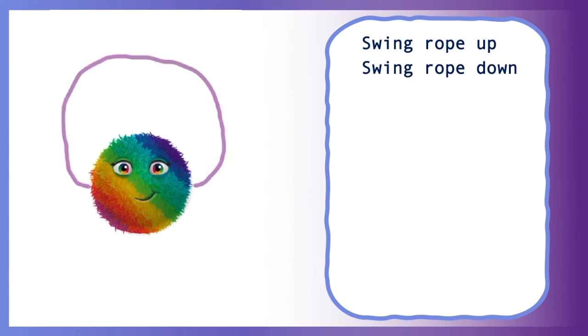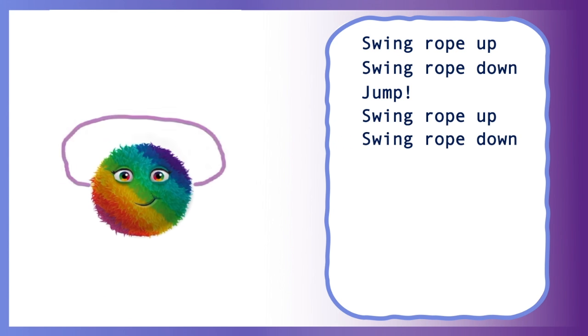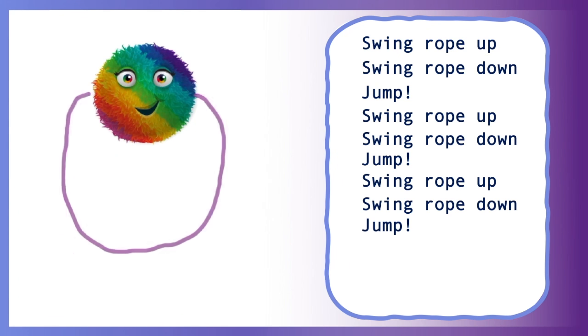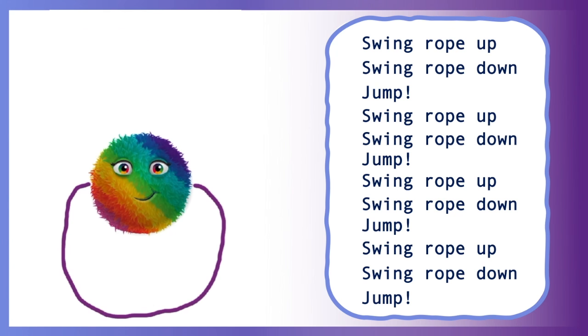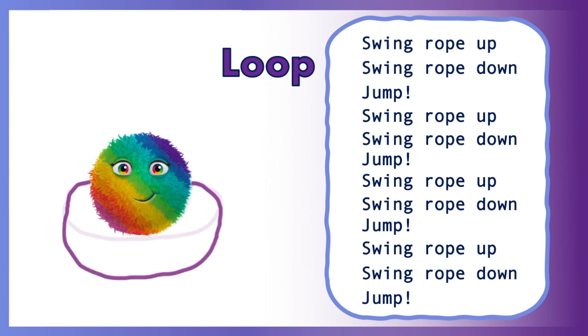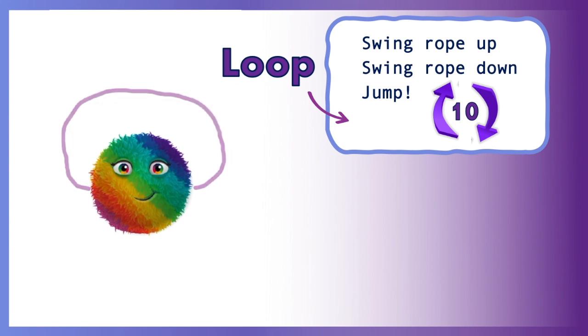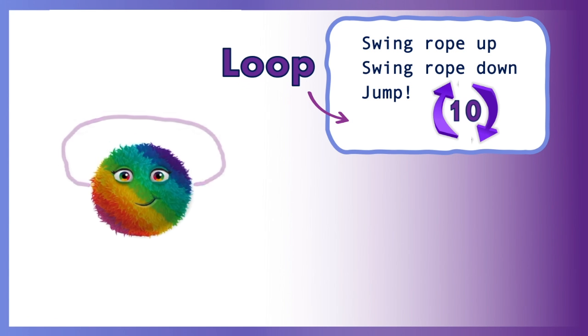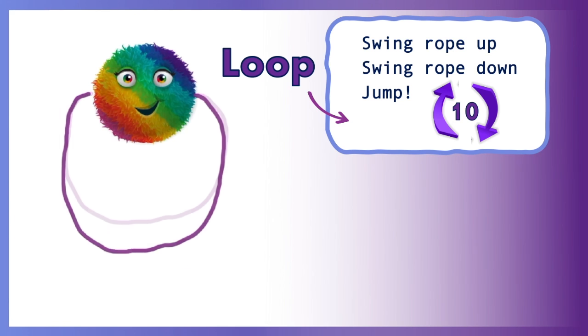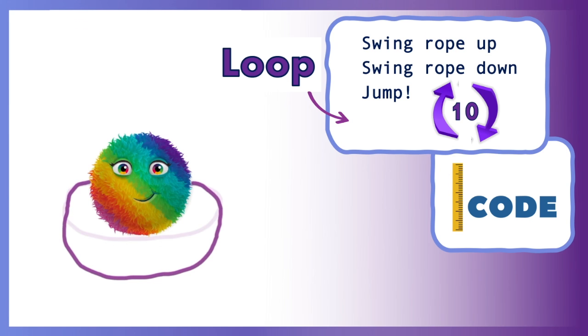Swing up, swing down, jump. Swing up, swing down, jump. Over and over again. Instead, you can use a loop in your code to turn this into this. The result is the same. Your fuzz will jump rope ten times. But the loop helps to make your code shorter and saves you the time it would take to write out all those repeating commands.